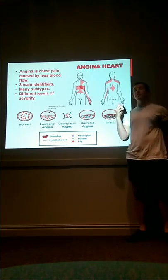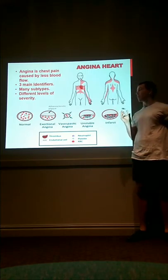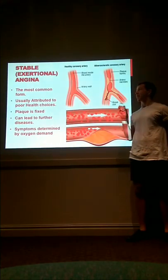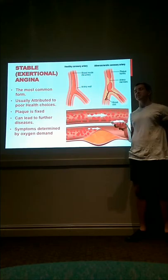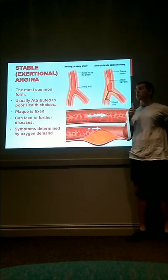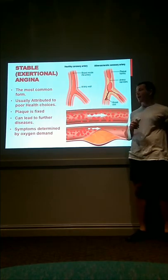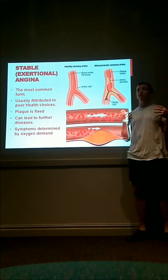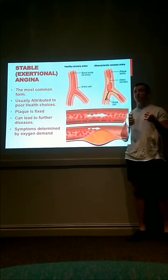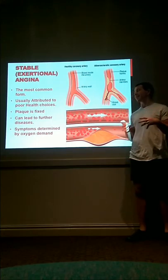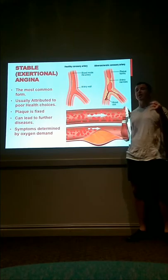Now there are many subtypes but three main types of angina with different levels of severity. The first type is stable or exertional angina, which is the most common type with about 90% of cases. This is usually attributed to poor health choices such as lack of exercise and unhealthy diet, and involves plaque fixed to the inside of the artery walls. This restricts blood flow and in turn oxygen content to the tissues, and can lead to further diseases such as coronary heart disease or, as mentioned earlier, heart attacks.